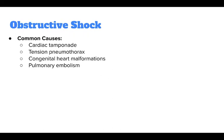Lastly is obstructive shock, which is similar to cardiogenic shock in that impaired heart function is the primary abnormality. In cardiogenic shock the contractility is impaired, but in obstructive shock the heart is prevented from contracting appropriately. Common causes of obstructive shock are cardiac tamponade, tension pneumothorax, congenital heart malformations, and pulmonary embolism. Obstructive and cardiogenic shock is most easily distinguished by the contractility of the heart — in obstructive shock, heart contractility is normal, although pumping function is not.